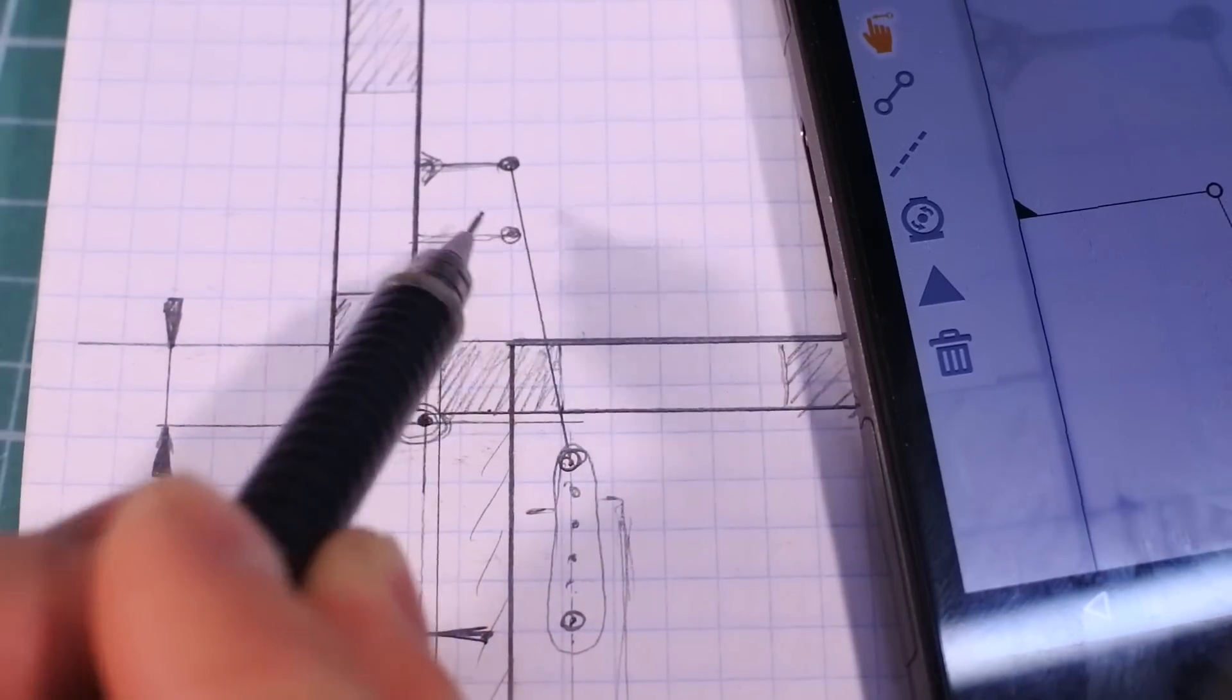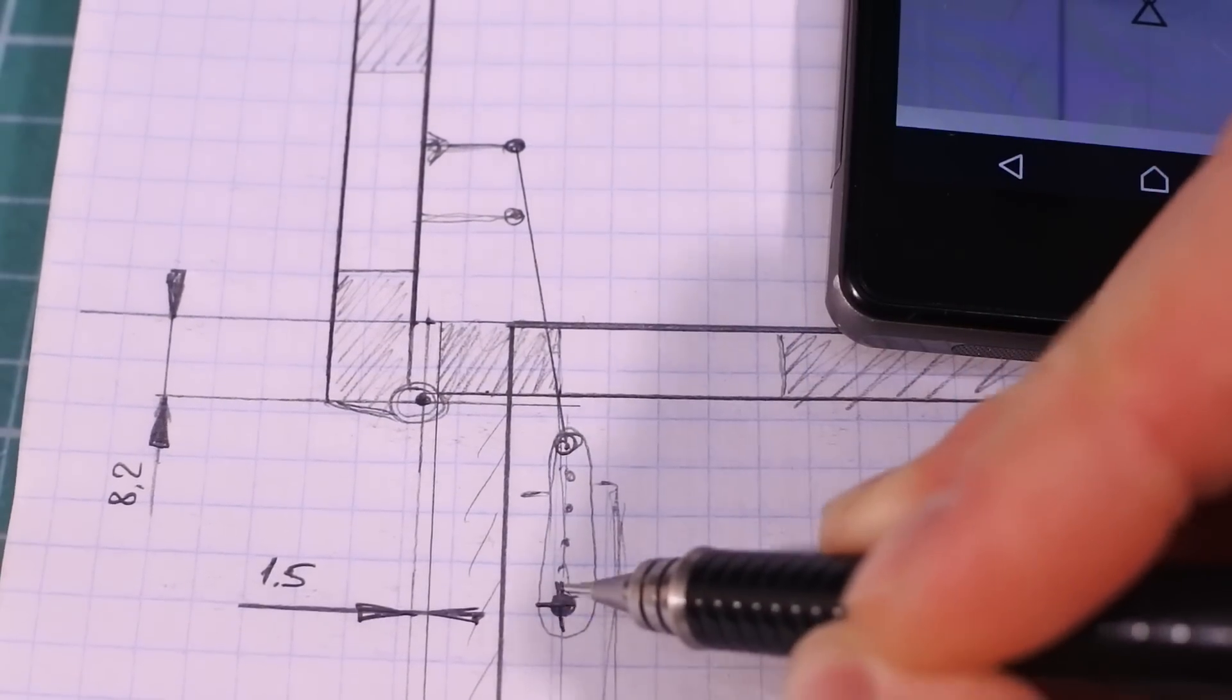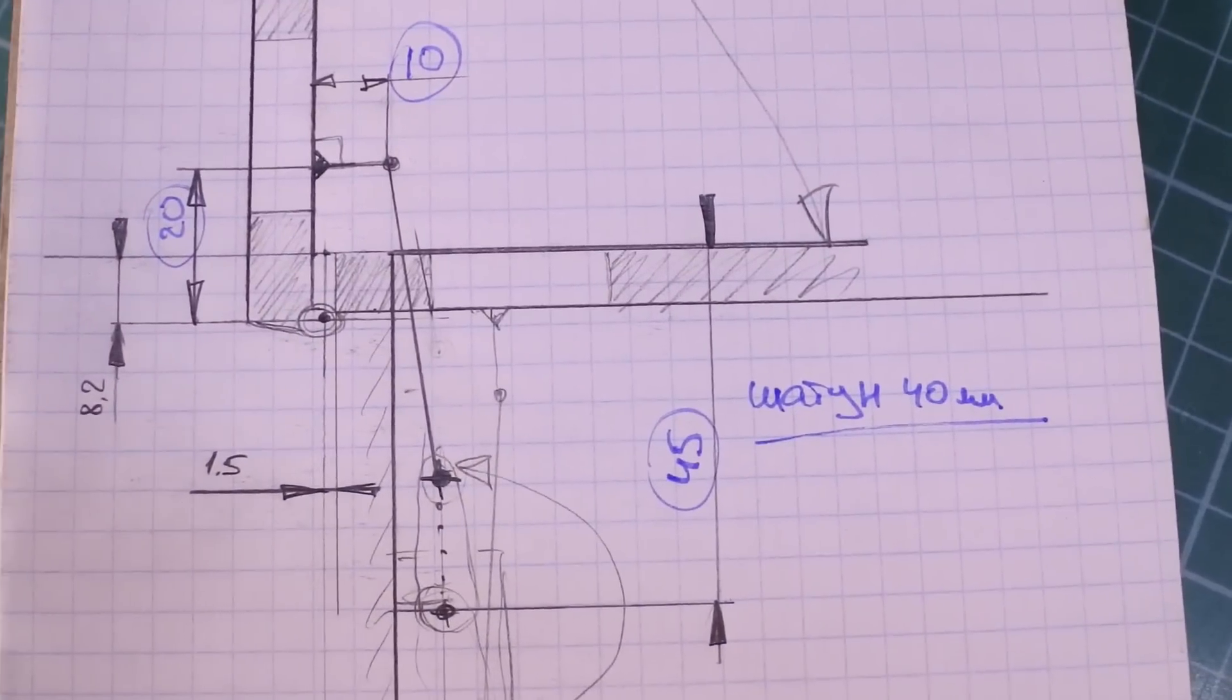Now, looking at this sketch I can make some corrections in my sketch. Using my sketch I can find all dimensions by measuring them with a ruler. And now we are ready to build the mechanism.